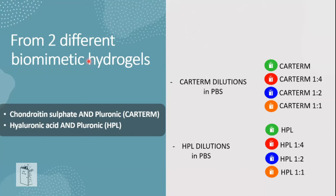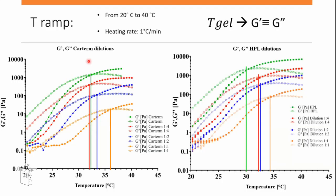We started with two biomimetic hydrogels: chondroitin sulfate + pluronic (CARTERM) and hyaluronic acid + pluronic (HPL), with various PBS dilutions. We evaluated how temperature affected G' and G'' and identified the transition temperature — the crossover point where G' equals G''. The original formulations showed higher stiffness; stiffness decreased with dilution. At 37°C, all formulations showed gel-like behavior with G' greater than G''.